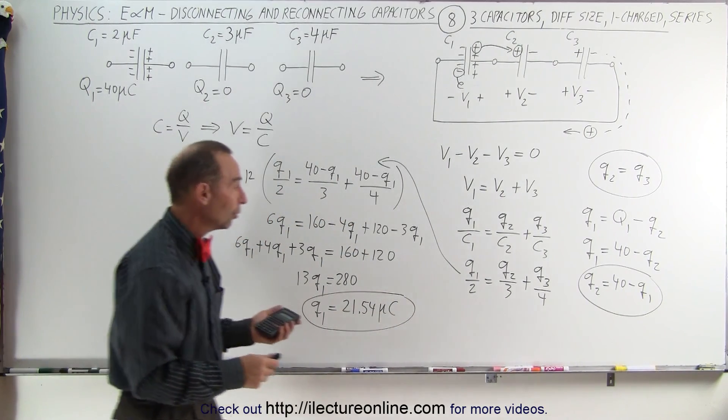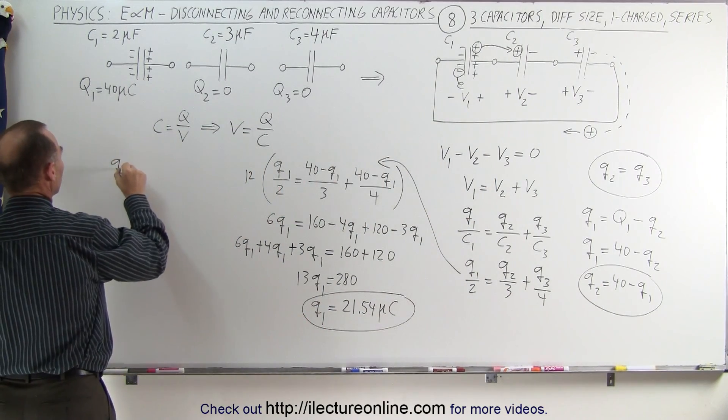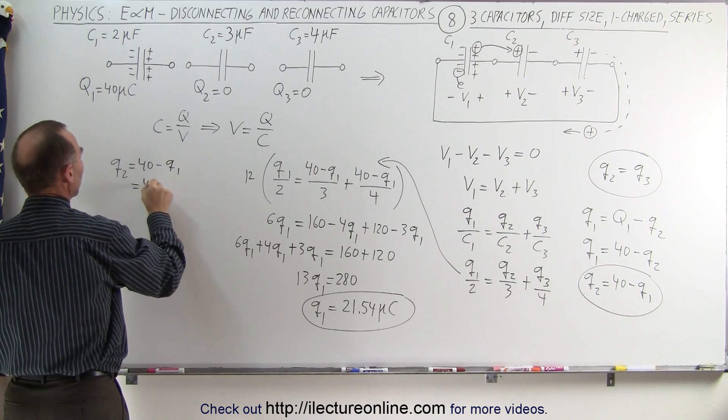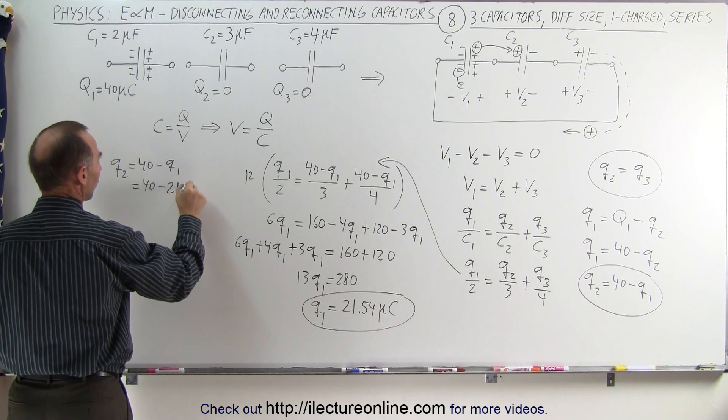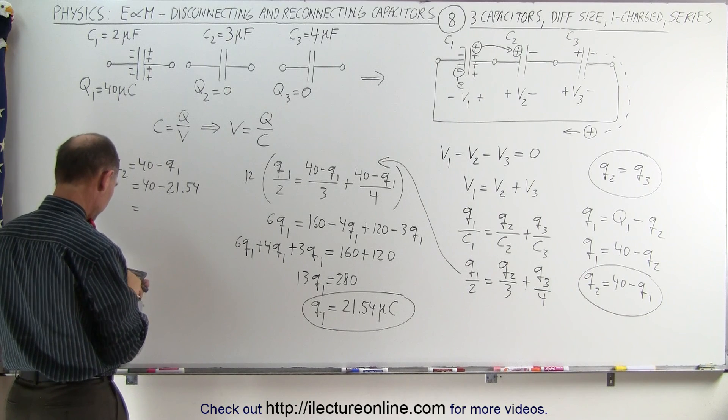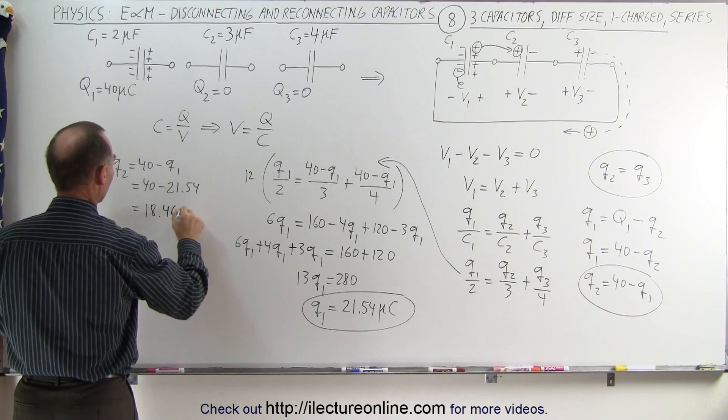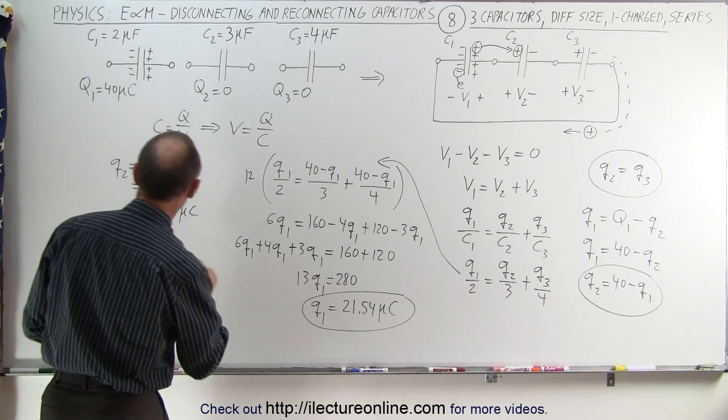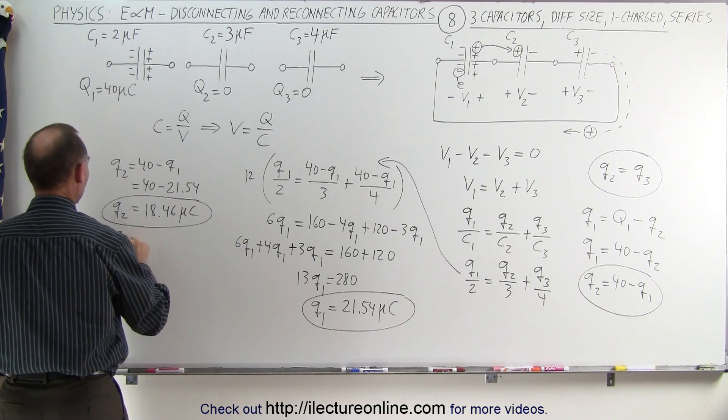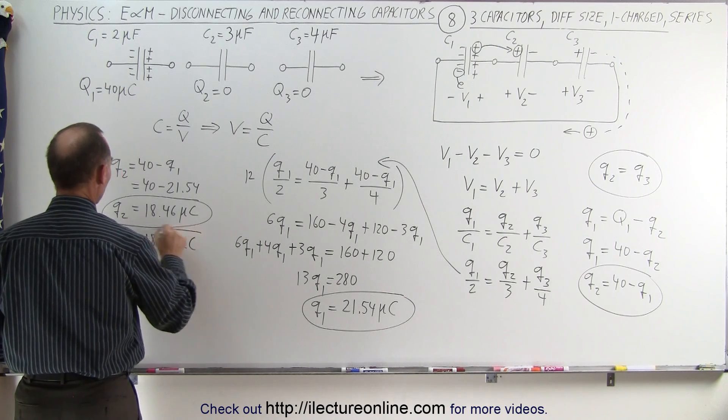So there's the charge Q1, now with this equation, we can find Q2. Q2 is equal to 40 minus Q1, which is equal to 40 minus 21.54, and so this is equal to Q2, 18.46 microcoulombs. So that gives us Q2, and Q3, since it's equal to Q2, also equals 18.46 microcoulombs.